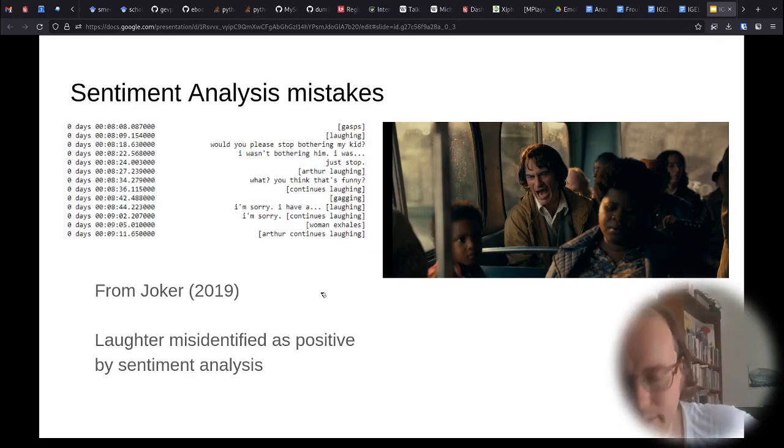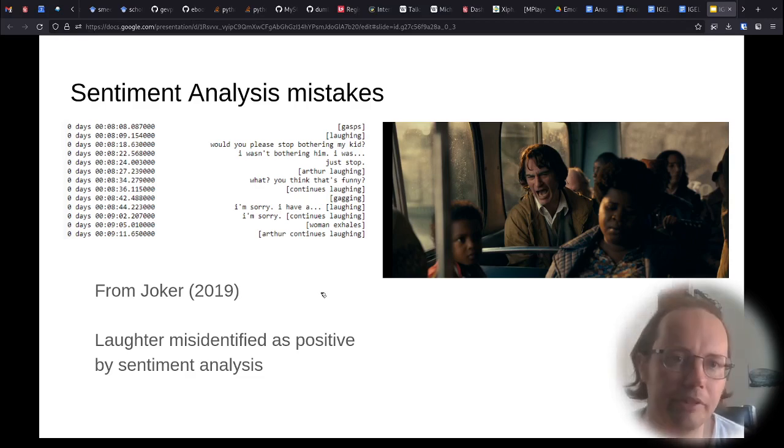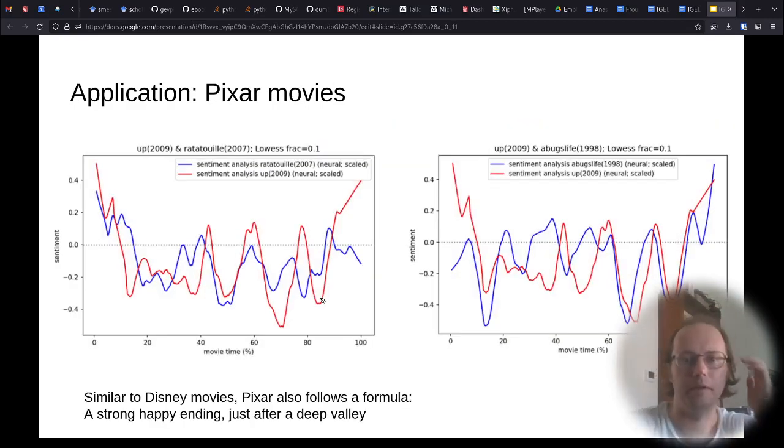Other interesting limitations for the sentiment analysis occur when we look more closely at the kind of mistakes it makes. An example is here from the movie The Joker, where there is a scene in a bus where the Joker starts laughing uncontrollably and maniacally, and the people around him start getting annoyed. And this is actually kind of a disturbing, sad scene, but the laughter is misidentified as positive by the sentiment analysis, which mismatches the situation in the movie.